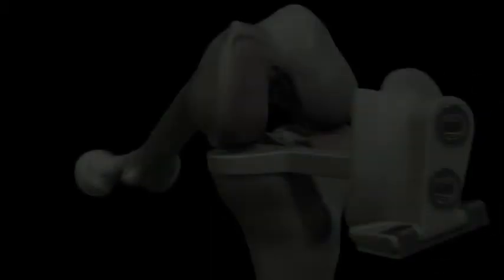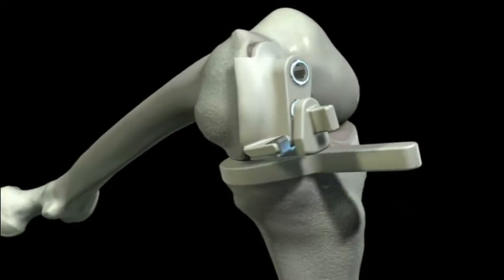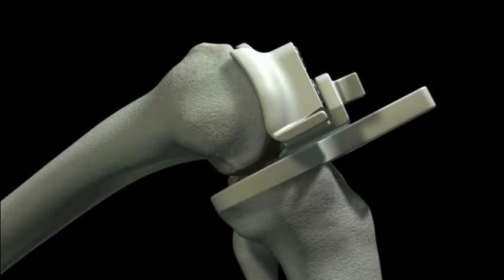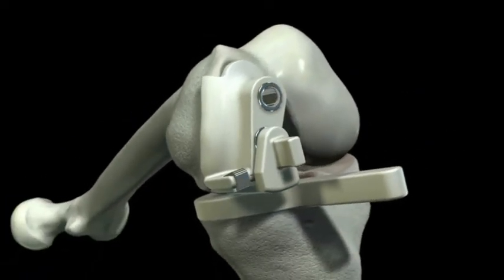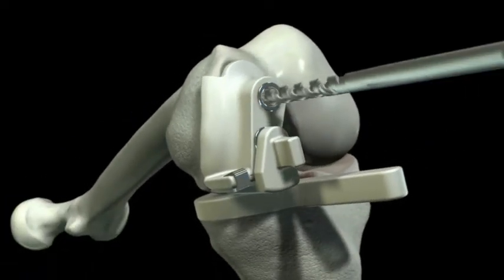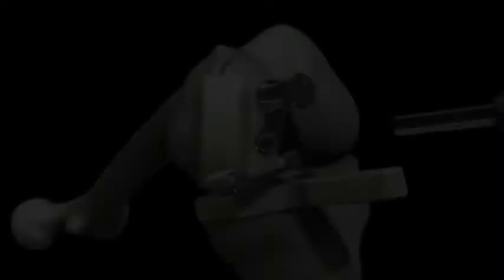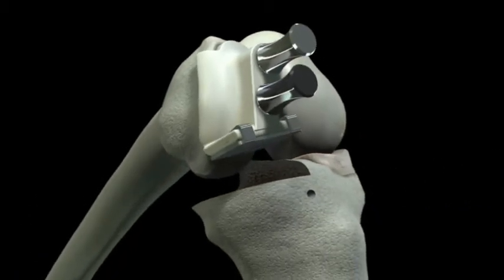Step 4: Femoral preparation. Attach the L-guide to the bottom pinhole on the femoral IJIG and place the assembly on the condyle. Adjust the angle of flexion until the L-guide rests flat on the spacer block while the spacer block touches off on the posterior condyle. Drill and pin the femoral IJIG beginning with the anterior pin first. Make the posterior femoral cut and remove the bone.